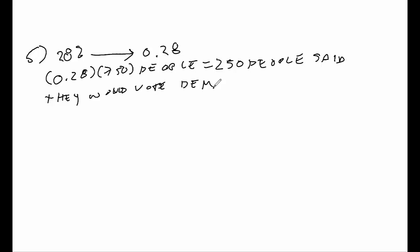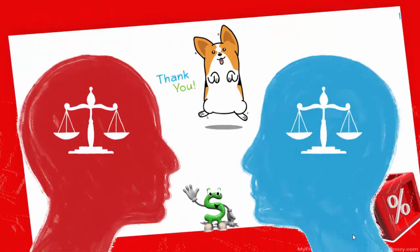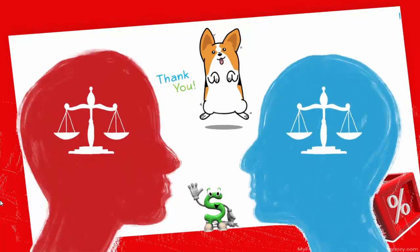Remember, when doing these types of problems, take your percent and convert it into a decimal, then multiply the decimal by whatever your whole is represented by. As we found on the whiteboard, 28% of 750 means that of those 750 people, 210 will vote straight Democrat. I hope you enjoyed this video — thank you very much for watching, take care, bye.